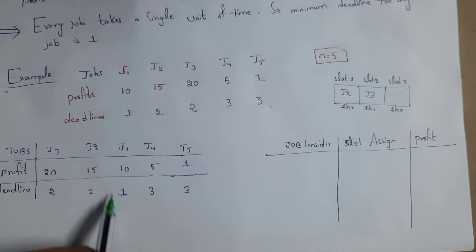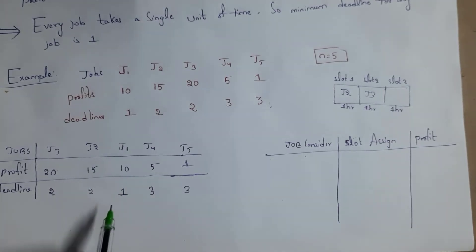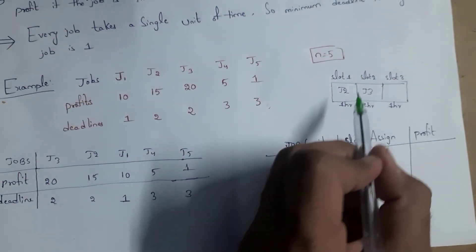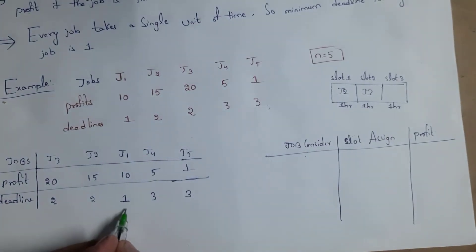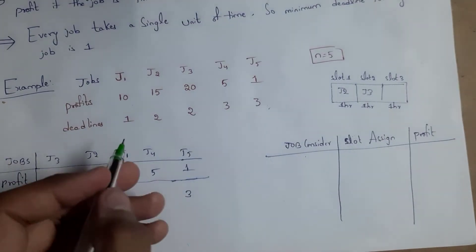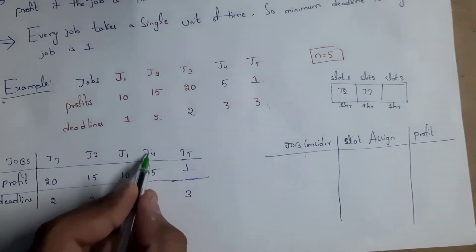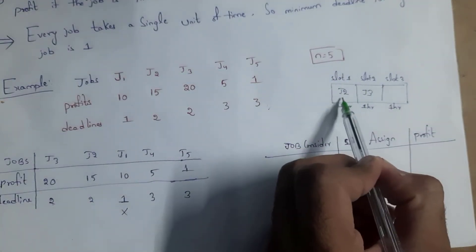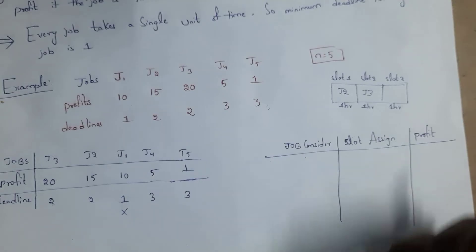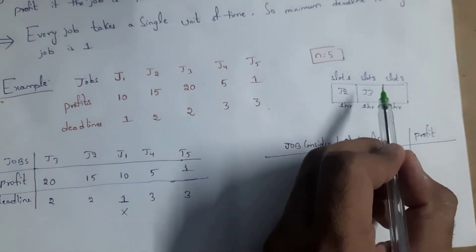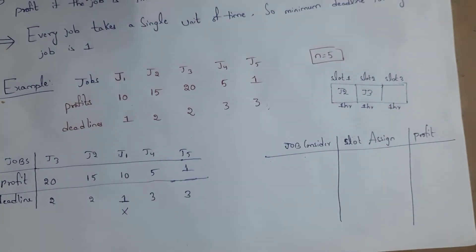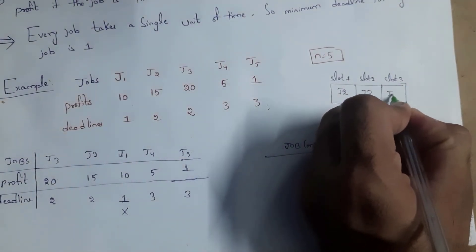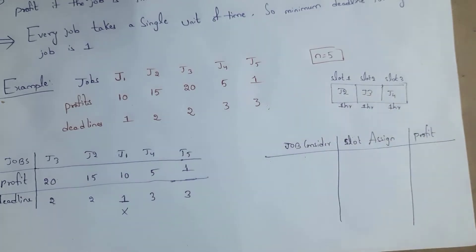So I place J2 in Slot 1. For job J1, the deadline is 1 hour, meaning it must be completed within the first hour, but Slot 1 is already assigned to J2, so I cannot consider J1. For job J4, the deadline is 3 hours, so it can go in Slot 1, 2, or 3, but Slots 1 and 2 are filled, so I place J4 in Slot 3.